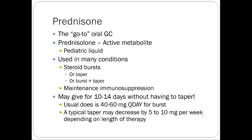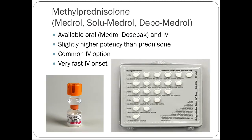Prednisone — with prednisolone as its active metabolite — is the most common oral steroid used in steroid bursts and tapers. It's also used as maintenance immunosuppression for solid organ transplant patients, typically at a very small dose once daily. We'll come back to prednisone and these drugs multiple times this semester.